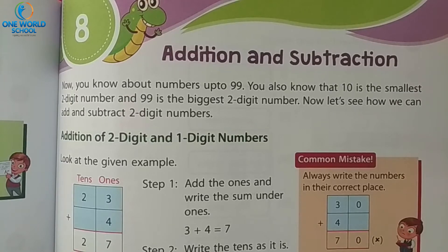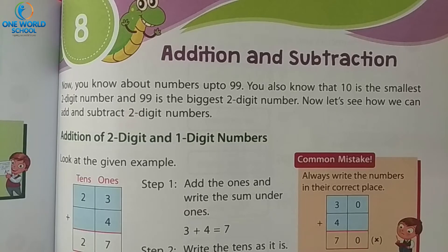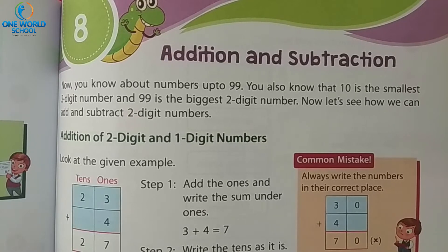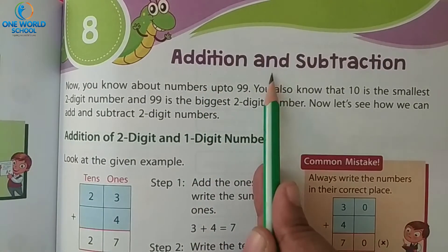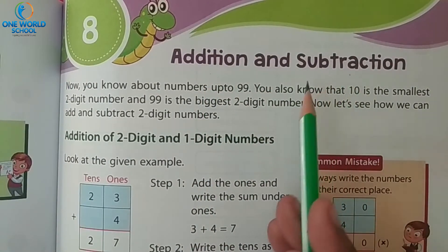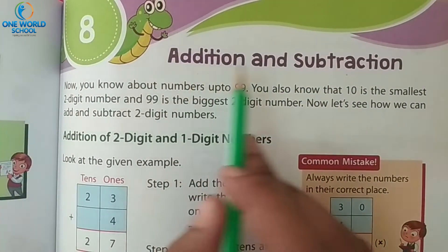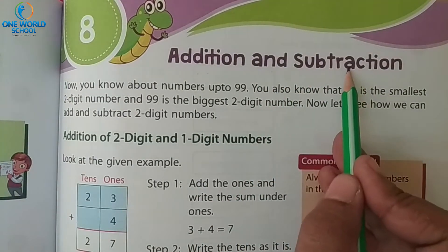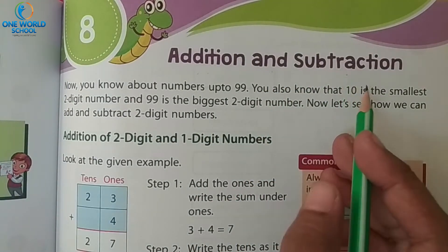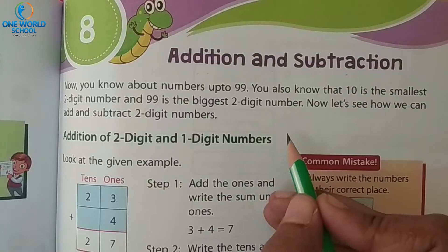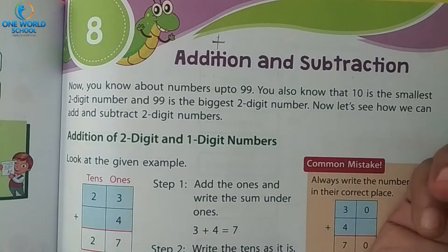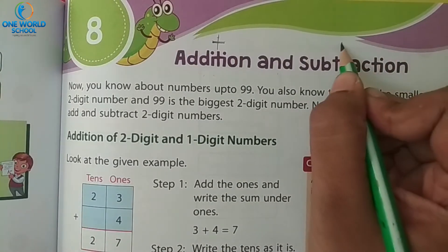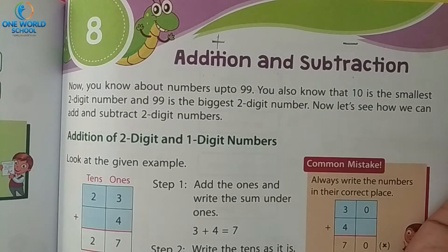So now we will start our lesson number 8. What is the name of the chapter? Addition and subtraction. Addition matlab ki plus. What is the sign of addition? Very good. And subtraction matlab? Minus. Yes.